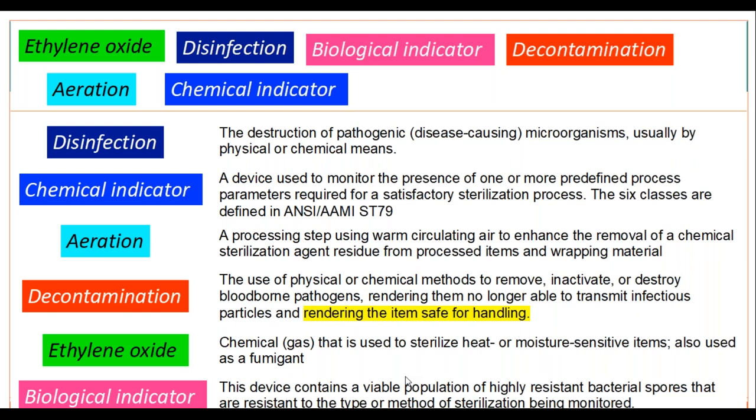Next is decontamination. We've covered this multiple times, but it's extremely important that you remember the APIC definition — what you'll see on your CIC examination — which includes the wording 'rendering the item safe for handling.' Decontamination is the use of physical or chemical methods to remove, inactivate, or destroy bloodborne pathogens, rendering them no longer able to transmit infectious particles and rendering the item safe for handling.